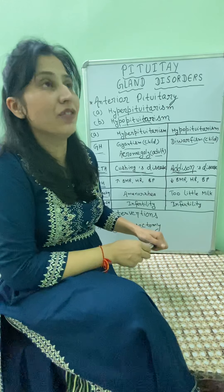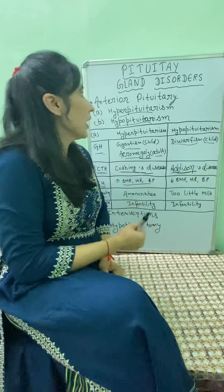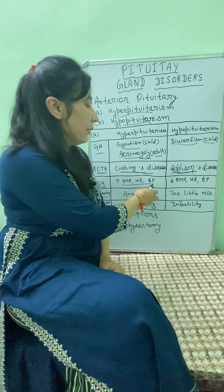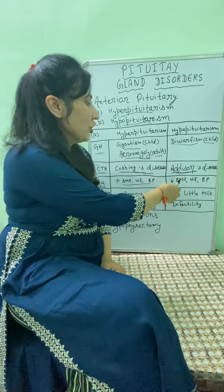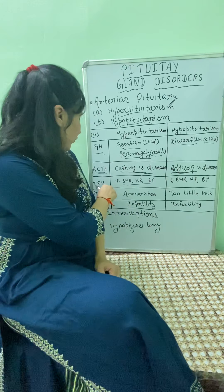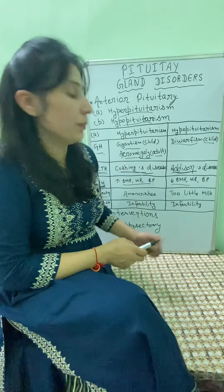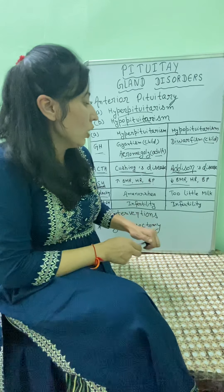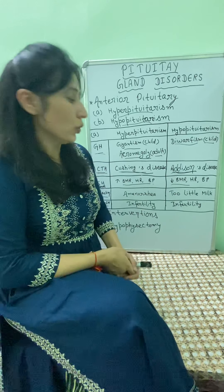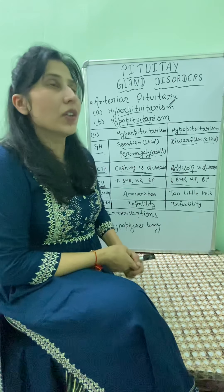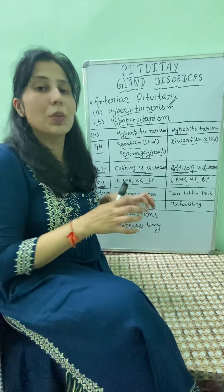Next is thyroid stimulating hormone. If there is low thyroid stimulating hormone, that means there is hyperthyroidism, which can cause goiter, increased metabolic rate, heart rate, and blood pressure. In hypopituitarism, if thyroid stimulating hormone is high, it can cause hypothyroidism, where basal metabolic rate, heart rate, and blood pressure will all be low, because the thyroid gland helps in metabolism and maintenance of heart rate and blood pressure.